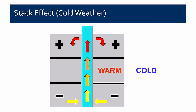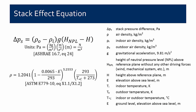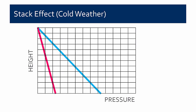Stack effect: in warm weather, stack effect causes the upper floors to be positive and the lower floors to be negative when you have a shaft connecting the building. Most buildings have some means for air to move up and down, so stack effect is fairly common. In warm weather, you have positive pressure on the upper floor and negative on the bottom floors. In cold weather, the opposite is true. The stack effect equation looks at the density of outside air versus inside air, with a conversion factor showing where the neutral plane exists.